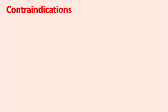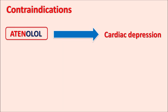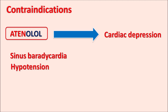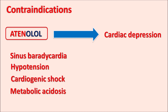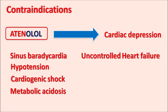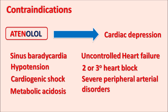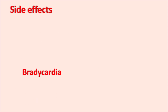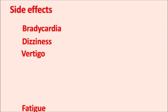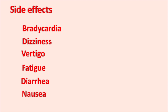What are the contraindications? Atenolol acts as a cardiac depressant, so it is contraindicated in situations that produce cardiac depression. For instance, this drug is contraindicated in sinus bradycardia, severe hypotension, cardiogenic shock, metabolic acidosis, uncontrolled heart failure (as it reduces cardiac output), second or third degree heart block (as it reduces AV conduction), and severe peripheral arterial disorders (as it blocks beta receptors). The important side effects of atenolol are mainly bradycardia, dizziness, vertigo, fatigue, diarrhea, and nausea. This drug can also increase the risk of heart block as well as congestive heart failure.